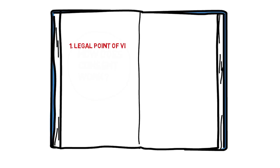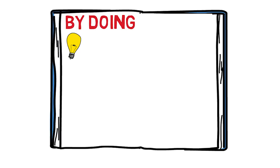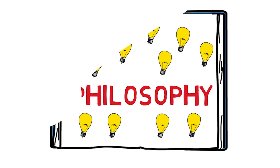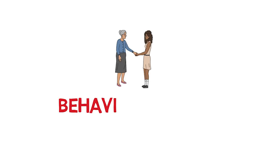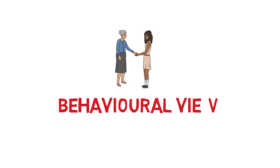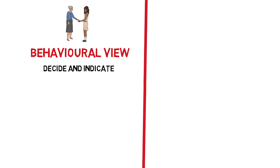If we're interested in what consent is from a legal point of view, then we just need to look up what the law is in our society. But if we're interested in what consent is from a moral point of view, then we need to answer this question by doing philosophy. Some people think that you need to indicate that the passenger is allowed to borrow your pen — that's the behavioural view of consent. Other people say that you don't need to indicate your consent; instead, you only need to decide that it's okay for the passenger to use your pen. That's the mental view of consent.